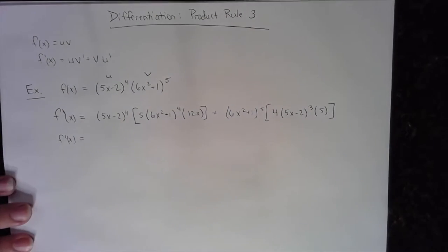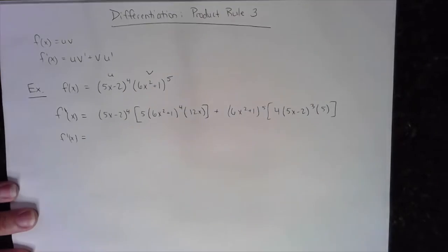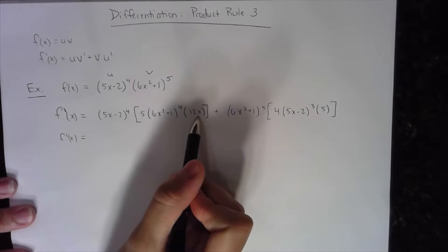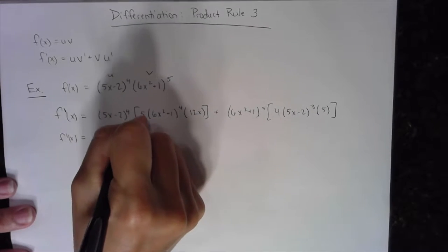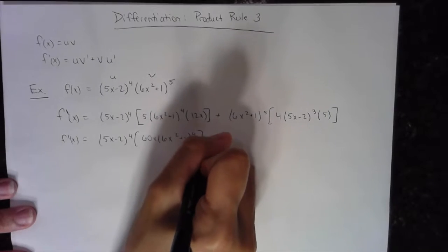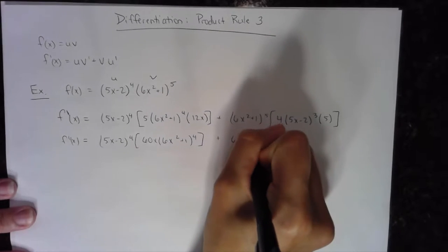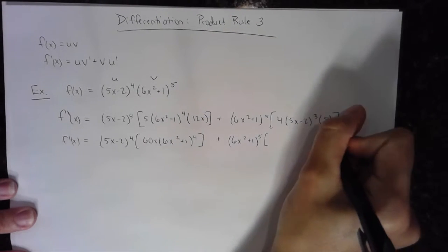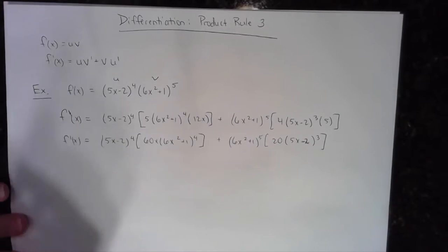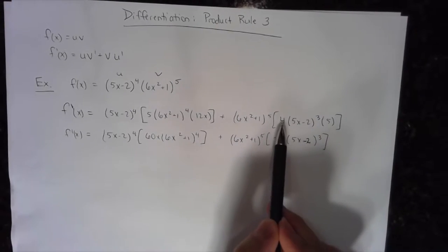Now when we simplify, we need GCF again. To make it a little easier, in this next step I'm going to keep everything the same — the only thing I'm going to change is multiply the 5 and 12x together, giving 60x, and multiply the 4 and 5, giving 20. So: (5x − 2)⁴ · 60x · (6x² + 1)⁴ plus (6x² + 1)⁵ · 20 · (5x − 2)³.